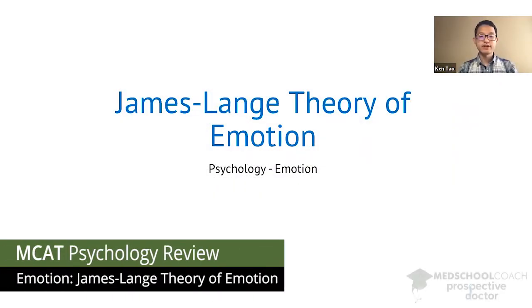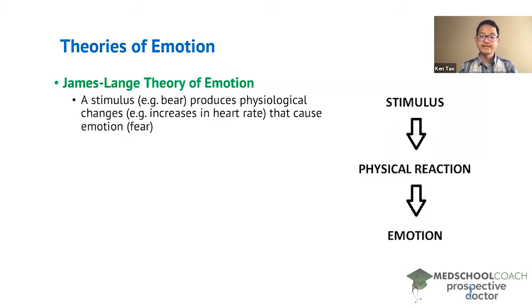In this video we're going to go over the James-Lange theory of emotion. As you can see in this diagram, this theory starts with a stimulus that produces a physiological change that produces an emotion.